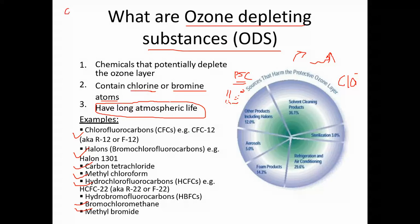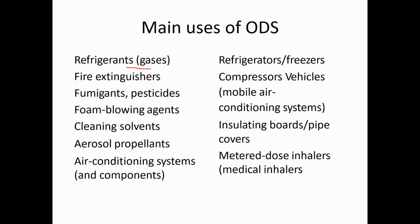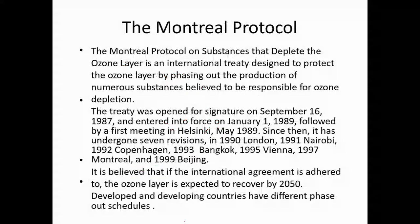Now, where are these ozone depleting substances used? Generally, in refrigerators and air conditioning — the refrigerant gas is the main source. They are also found in fire extinguishers, pesticides, cleaning agents, and in the manufacturing process of insulation materials.